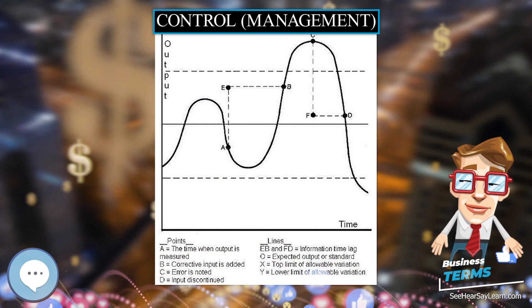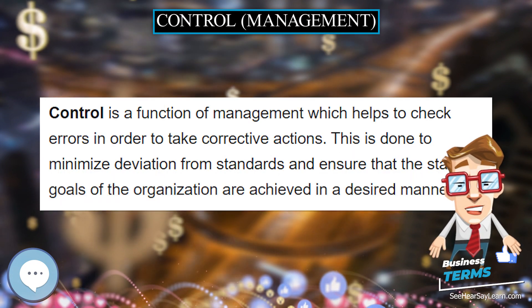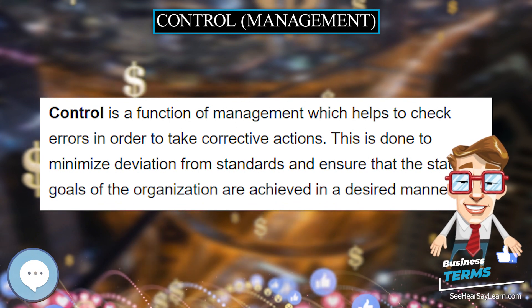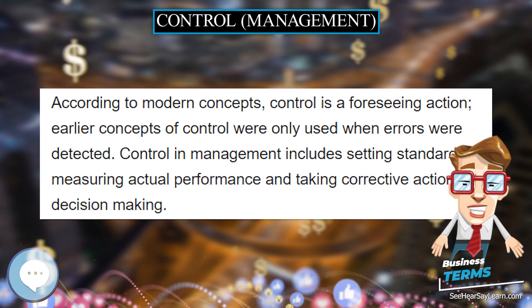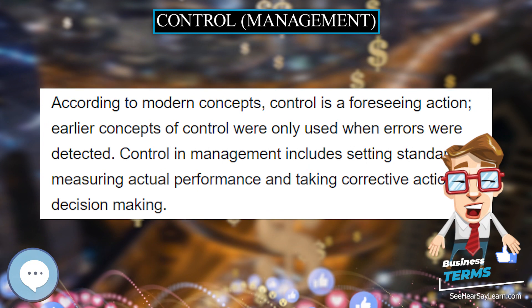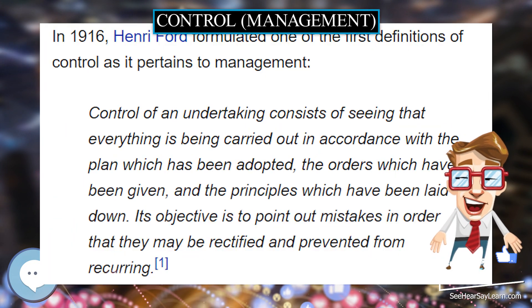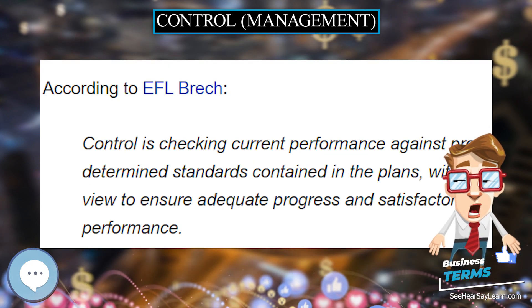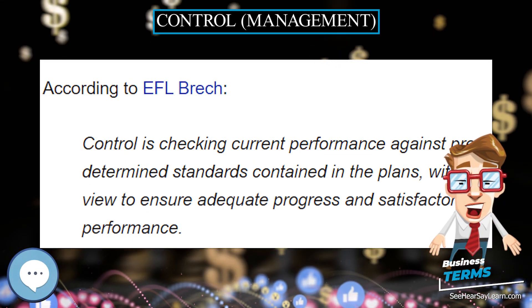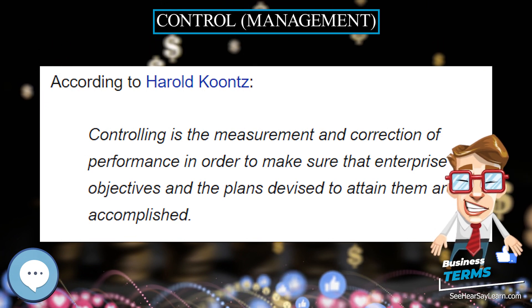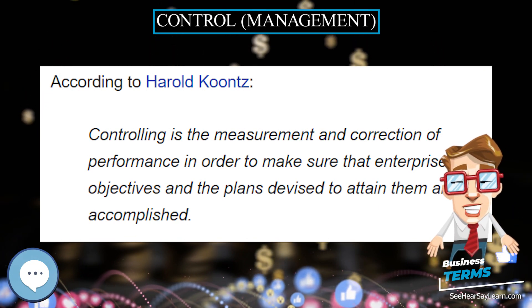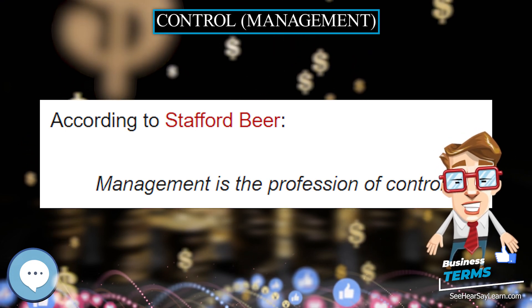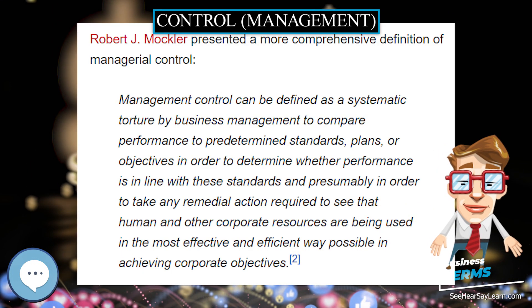Control management: control is a function of management which helps to check errors in order to take corrective actions. This is done to minimize deviation from standards and ensure that the stated goals of the organization are achieved in a desired manner. According to modern concepts, control is a foreseeing action; earlier concepts of control were only used when errors were detected. Control in management includes setting standards, measuring actual performance, and taking corrective action in decision making.